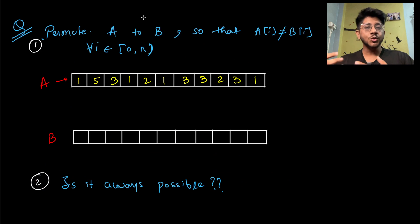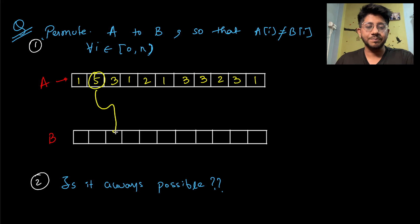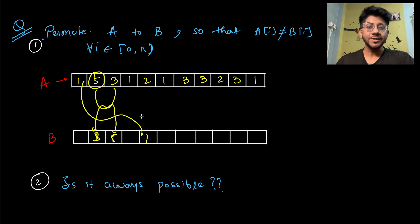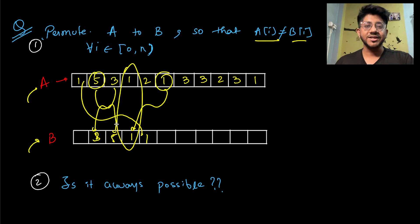What is the problem at hand? You are given an array A and you have to generate another array B, which is number one, a permutation of A, meaning the elements remain the same. You have to take the elements and place them in the new array such that A[i] is not equal to B[i] after placing them. You cannot pick an element and place it at its same position because they would become equal. So you have to find any such permutation of A such that A[i] ≠ B[i], which is called a derangement of the array.